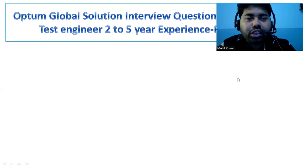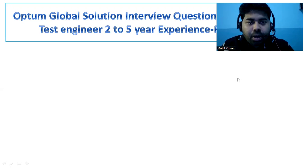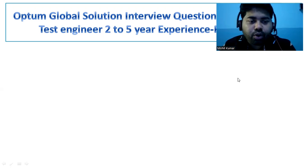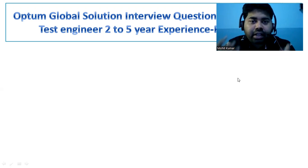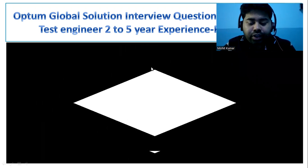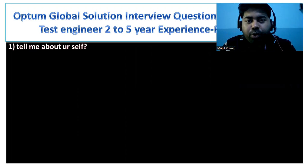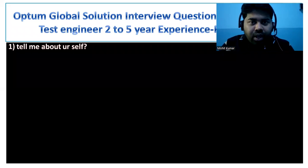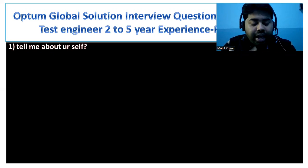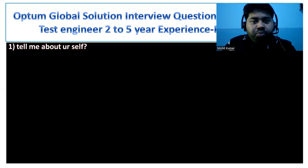Hi everyone, welcome back to Engineer Pickup channel. In this video we will discuss Optum Global Solutions interview questions for automation test engineer with up to five years experience. This is the first round, the technical round. The first question is always 'tell me about yourself.' You have to highlight your relevant experience, skill set, roles and responsibilities.